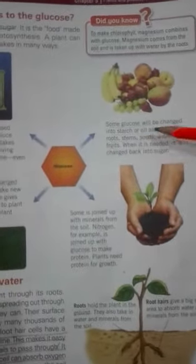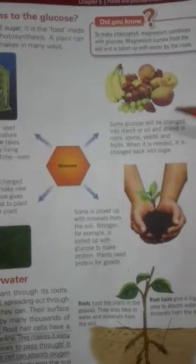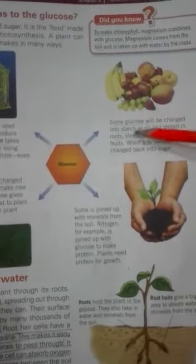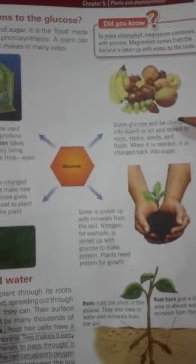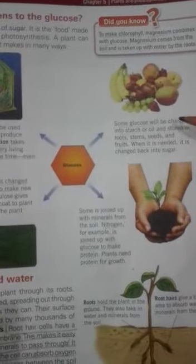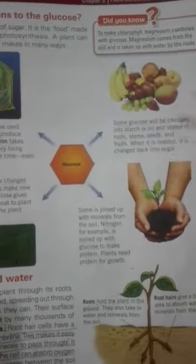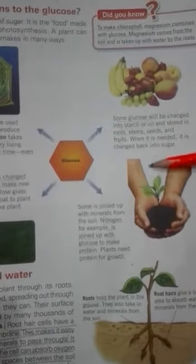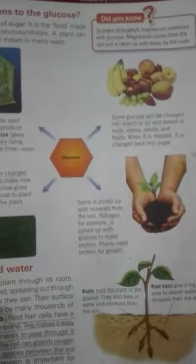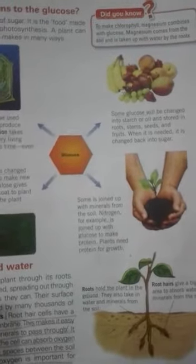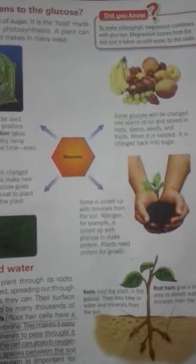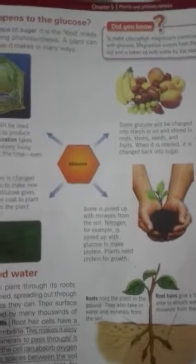The third use is that glucose is converted into starch and oil, and stored in roots, stems, seeds, and fruits. When it is needed, the starch is changed back into sugar for use by the plant.